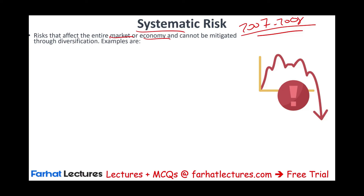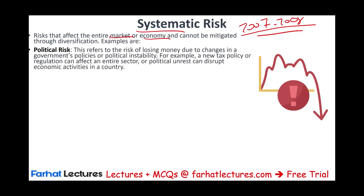Examples of systematic risk include political risk — the risk of losing money due to changes in government policies or political instability. A new tax policy or regulation could affect an entire sector and bring down the whole economy. Political unrest and civil wars can disrupt economic activity in a country. It doesn't matter what company you are — airline, pharmaceutical, technology, or real estate — it's all affected.